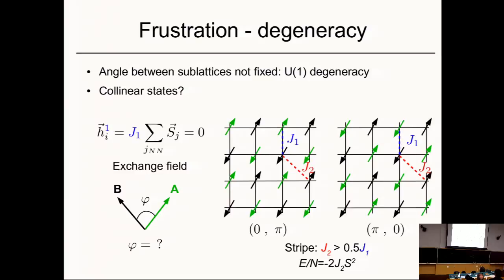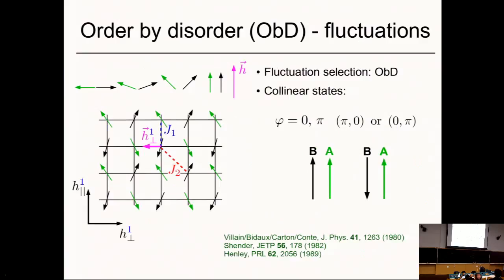How do we know that we really have those two states where the sublattices are either collinear or anticollinear? And how do we decide, because at least at this classical energy level they're really degenerate. This dilemma is solved by this so-called order by disorder — an old idea put forward by Villain and others in the 80s, and especially Chris Chalker, who made it famous and pushed it to a broader audience.